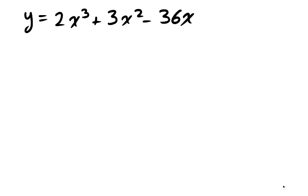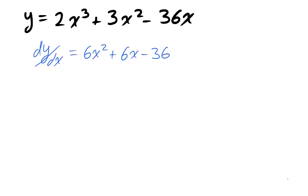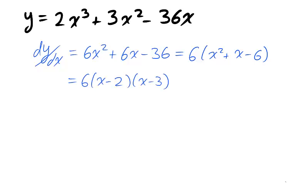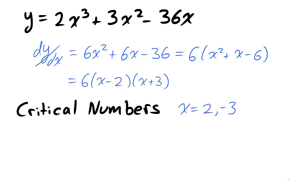Take for example the polynomial 2x³ + 3x² − 36x. We begin by finding the critical numbers of the polynomial, taking the first derivative and simplifying it. The derivative of this function is a polynomial, which is continuous everywhere. Therefore, by the intermediate value theorem, the only values where the derivative changes signs are the zeros of the polynomial: x = 2 and x = −3.